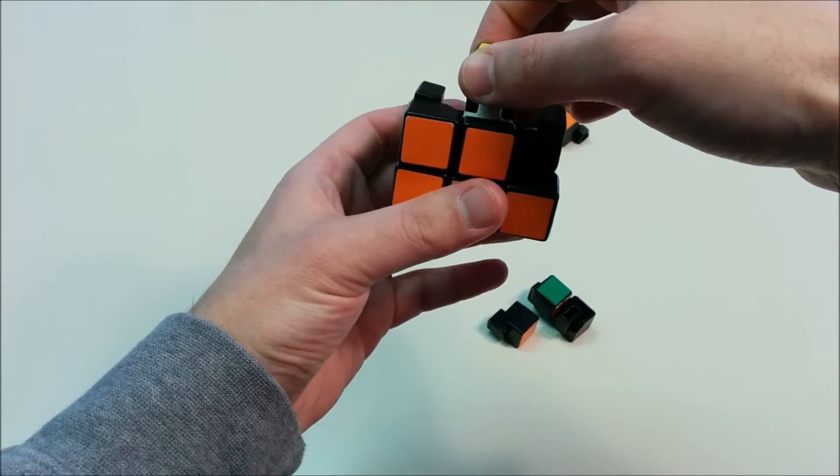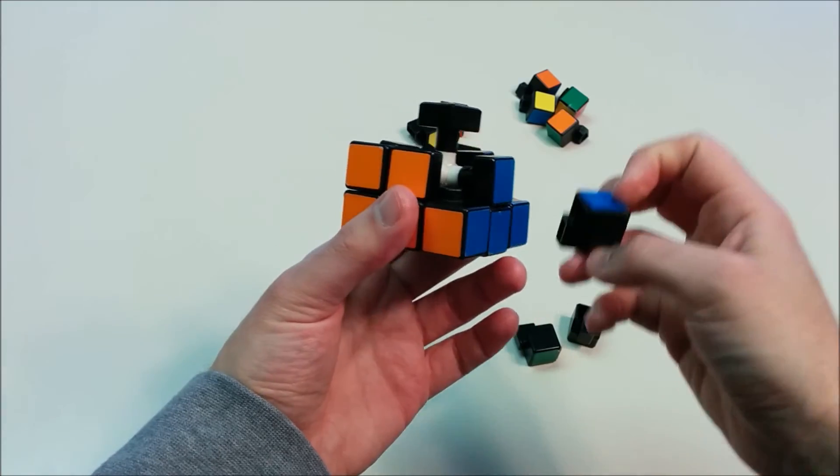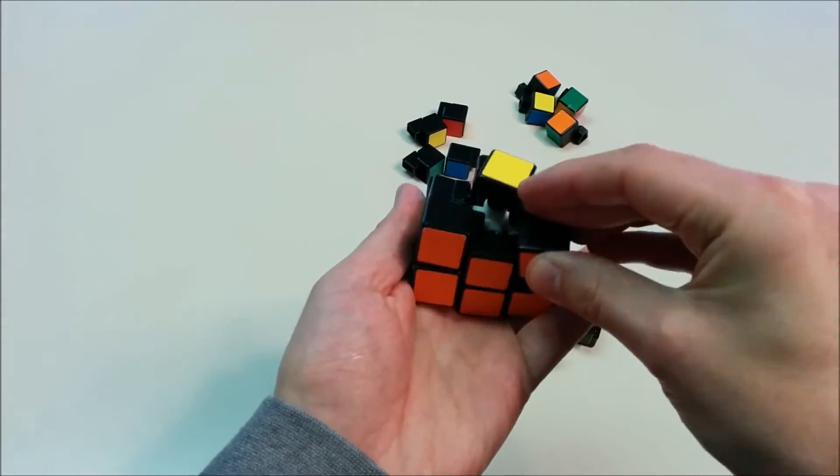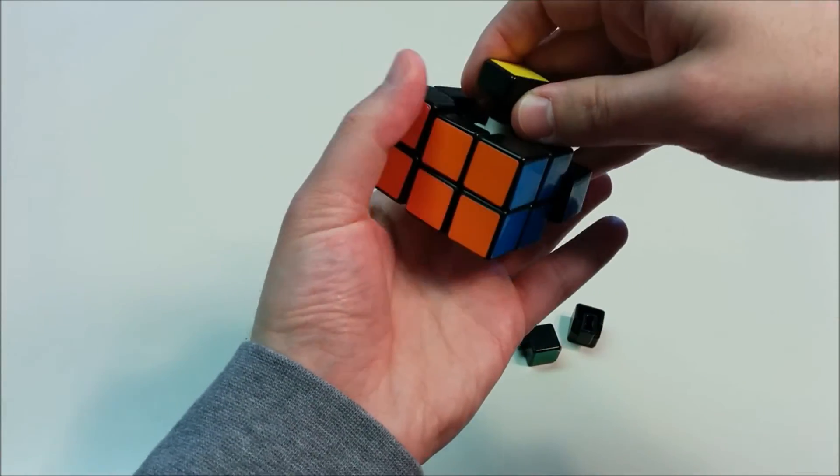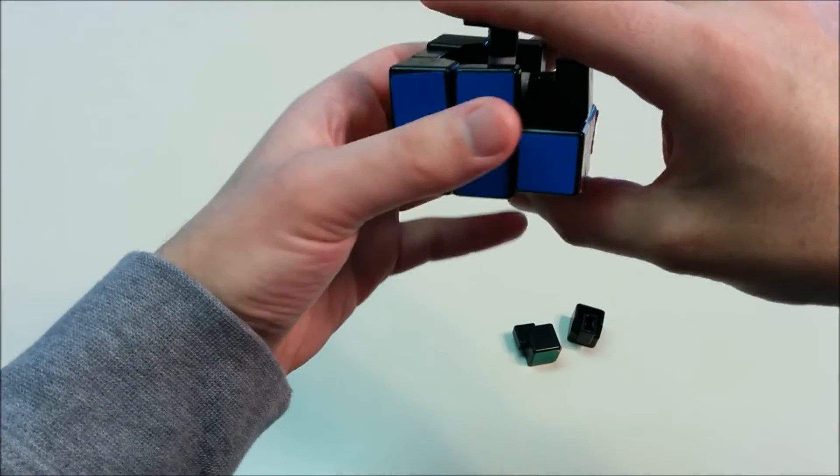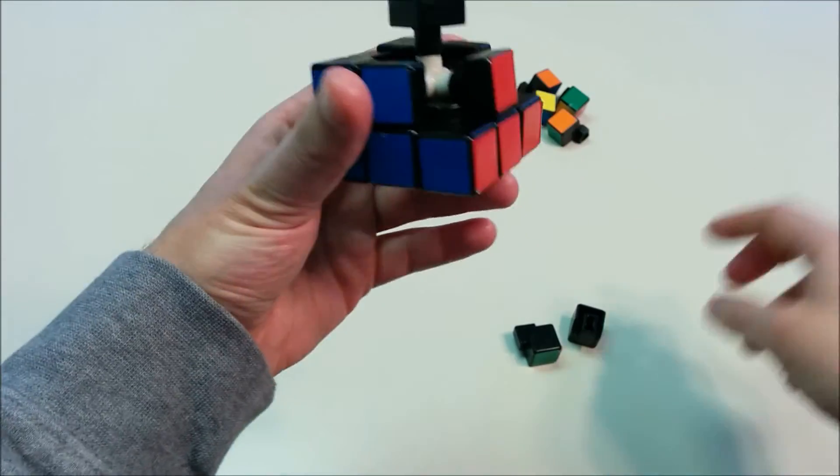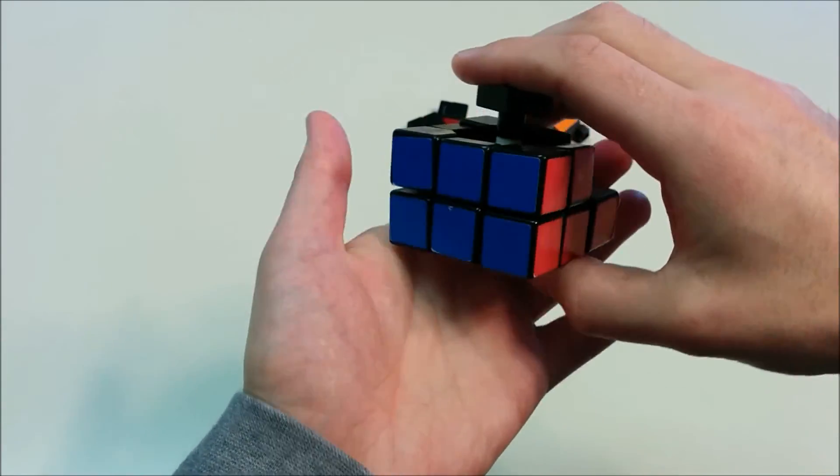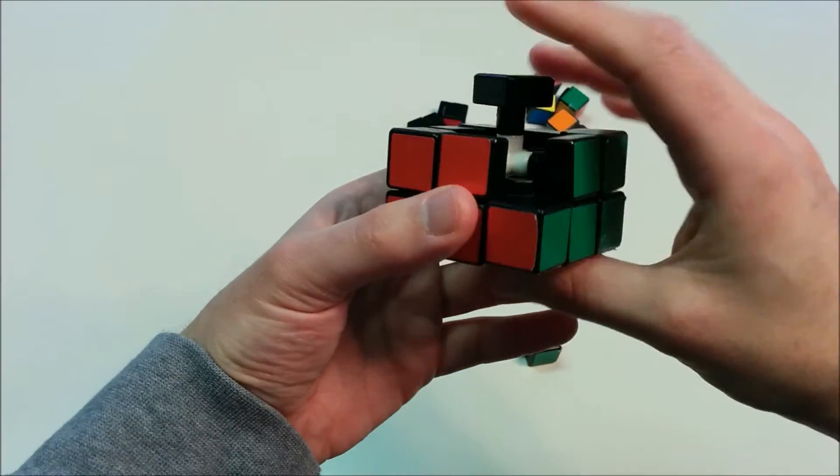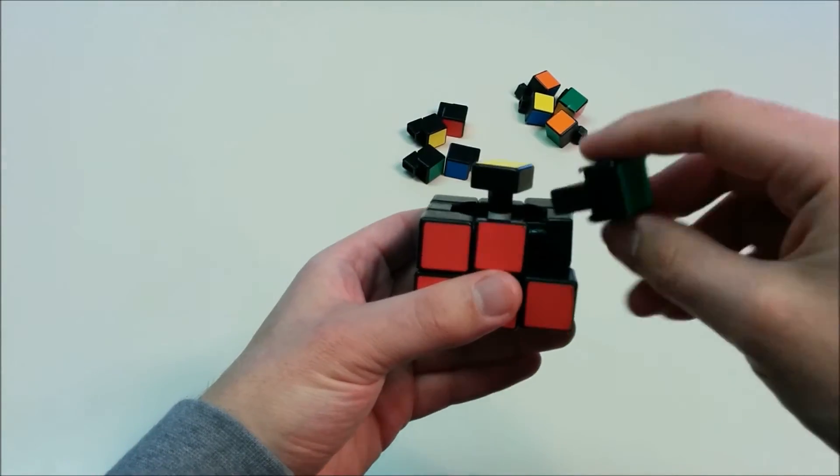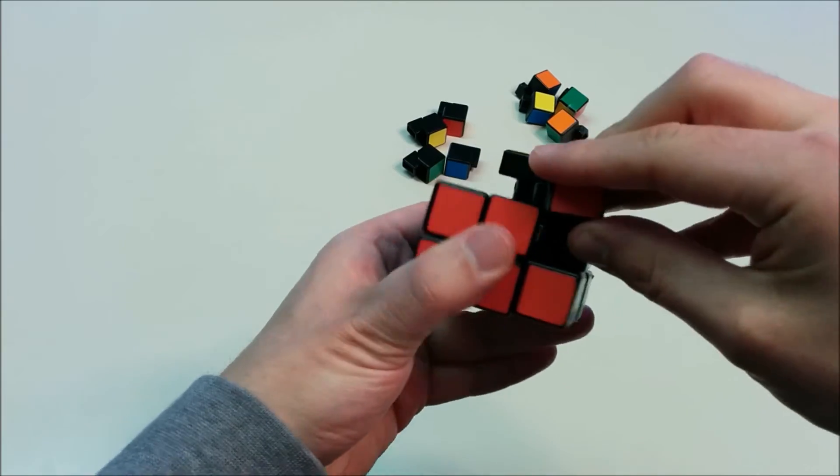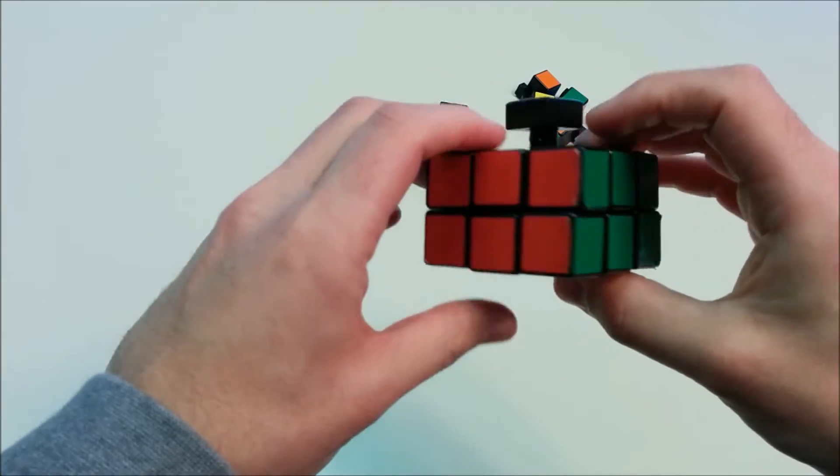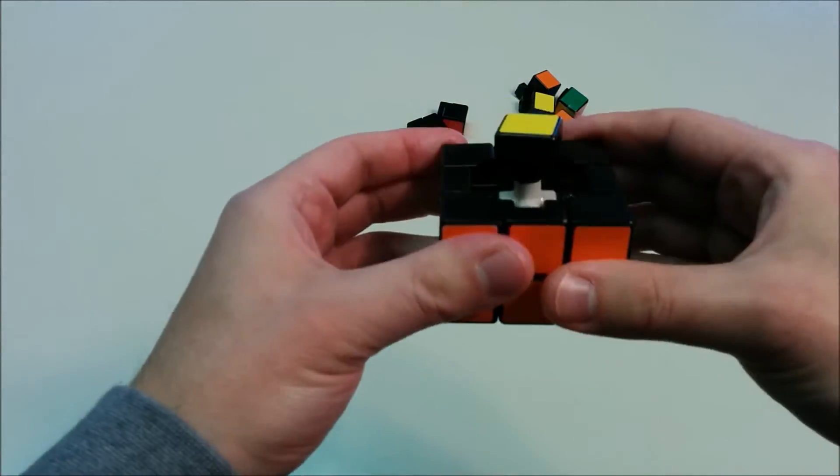We'll continue going around the middle layer. We want to match an orange and blue piece in the correct orientation. We'll continue matching a blue and red piece. And finally we have a red and green piece. So once we put that piece into place, we have solved the second layer.